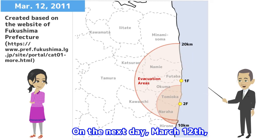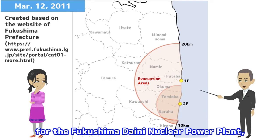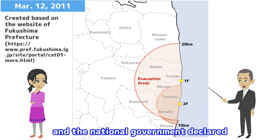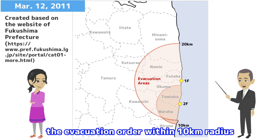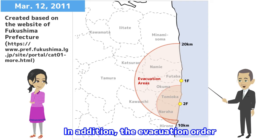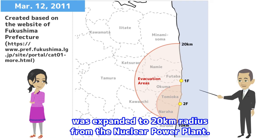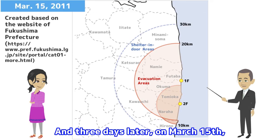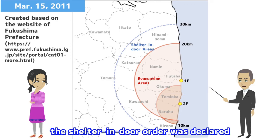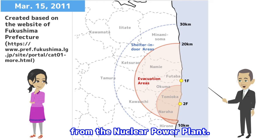On the next day, March 12, the nuclear emergency situation was also declared for the Fukushima Daini Nuclear Power Plant, and the national government declared the evacuation order within a 10 km radius from that nuclear power plant. In addition, the evacuation order with respect to the Fukushima Daiichi Nuclear Power Plant was expanded to a 20 km radius. And three days later, on March 15, the shelter-in-door order was declared between 20 km and 30 km radius from the nuclear power plant.